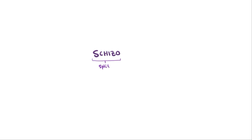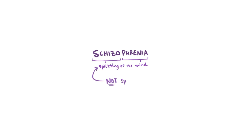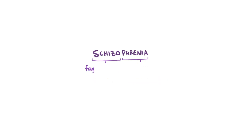Schizo means split, and phrenia in this case refers to the mind. Even though schizophrenia can be interpreted to mean splitting of the mind, it does not refer to a split personality, like some media sources might portray, but rather schizophrenia describes a scattered or fragmented pattern of thinking.